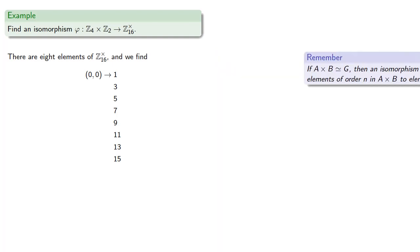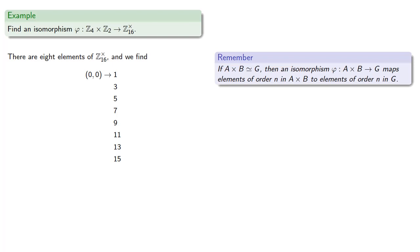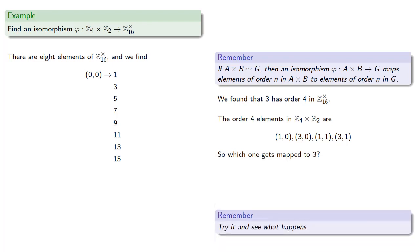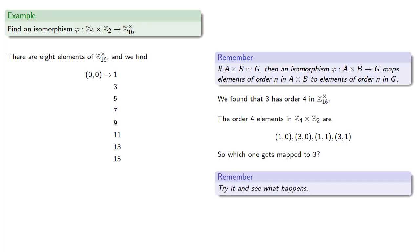Next, remember that isomorphisms must map elements of order n to elements of order n. So we found that 3 has order 4 in our group of integers mod 16 under multiplication, and the order 4 elements in Z4 cross Z2 are... And so the question is, which one gets mapped to 3? And the answer is, let's try it and see what happens.